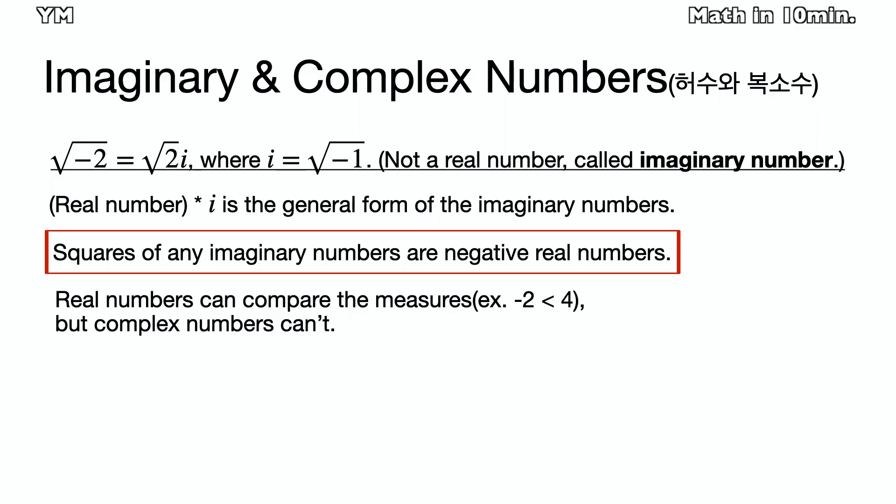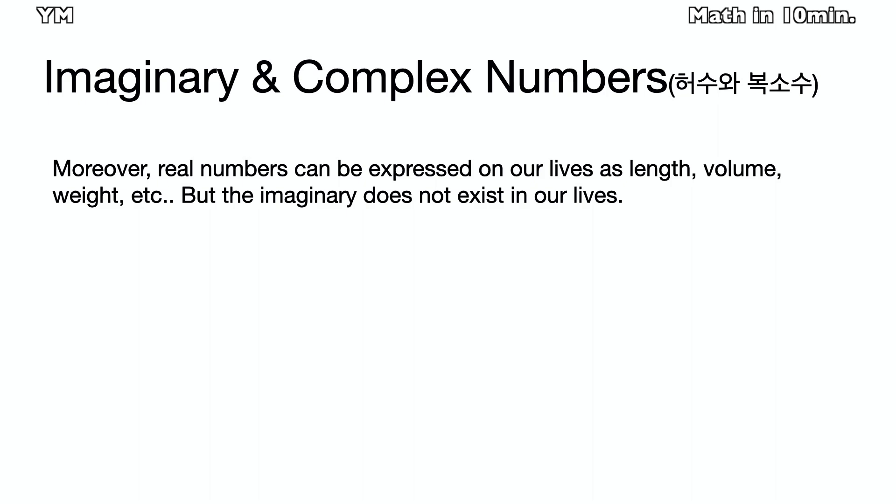Then squares of all imaginary numbers are negative real numbers, while squares of all real numbers are positive. Any distinct numbers can compare which is larger or smaller, but the distinct complex numbers cannot do that. Moreover, while real numbers exist in our real lives as length, volumes, weights, etc., the imaginary numbers don't.